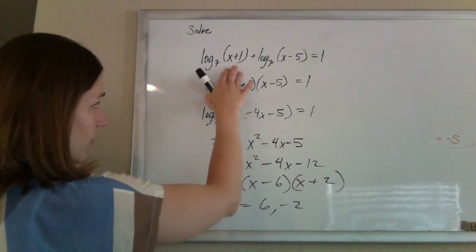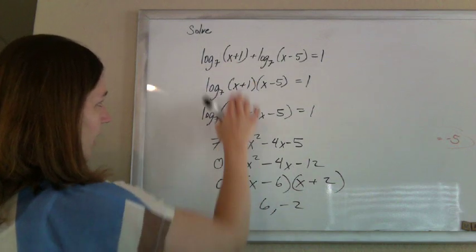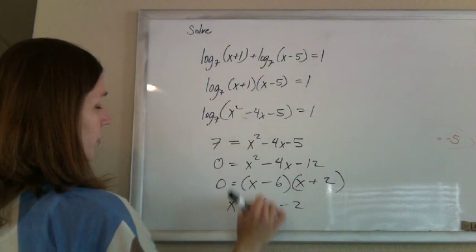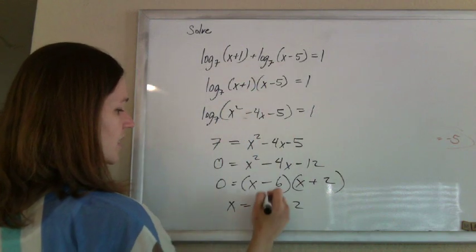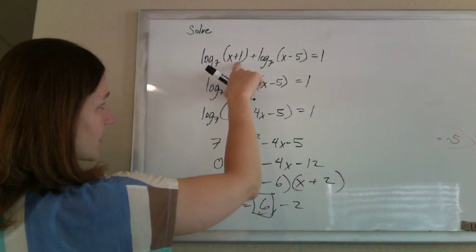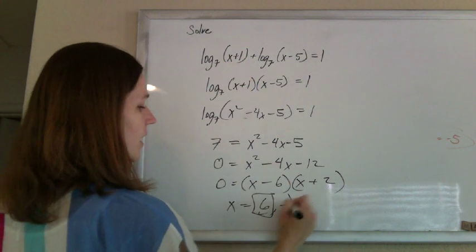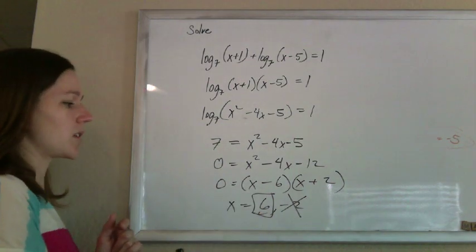Now you always have to check when we start off with logs for extraneous answers. So we can't take the log of a negative number, but if we plug in 6, that's positive 7, that makes a positive 1. The 6 checks out. A negative 2. Uh-oh. Negative 2 plus 1 is a negative 1. Can't take the log of a negative number. Ditch the negative 2. That's extraneous. Our only answer is 6.